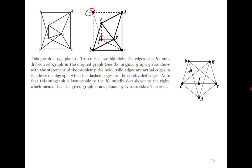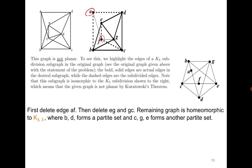At the same time, this is an interesting example where you can also obtain a subgraph homeomorphic to K3,3. Delete edge A-F, then delete edges E-G and G-C. It is then easy to observe that the remaining graph is homeomorphic to K3,3, where C, G, E form one partite set and the remaining vertices form the other partite set.